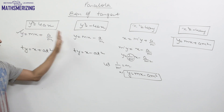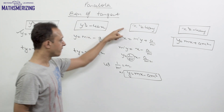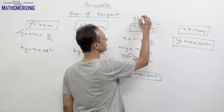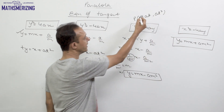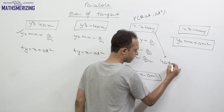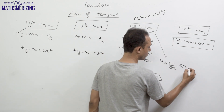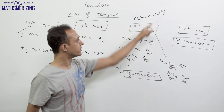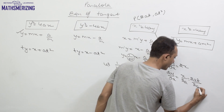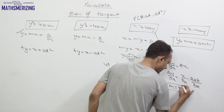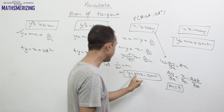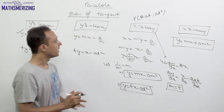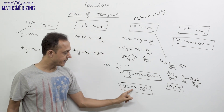For the third form we will also write the tangent in terms of parameter t. Any point on the parabola x² = 4ay is (at, at²). Differentiating the curve gives 4a·dy/dx = 2x, so dy/dx = x/2a. Substituting x = at gives slope = t. Replacing t with m, the equation of tangent is y = tx - at². So for the third form, the equation of tangent in terms of parameter t is y = tx - at².